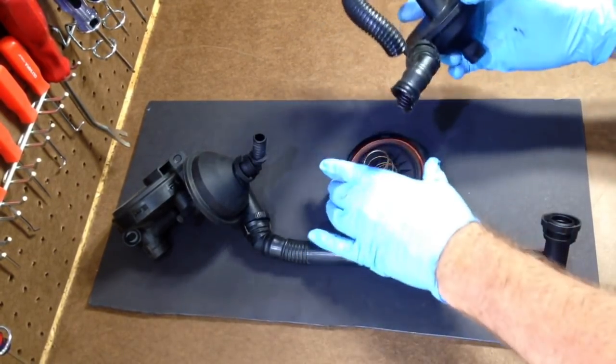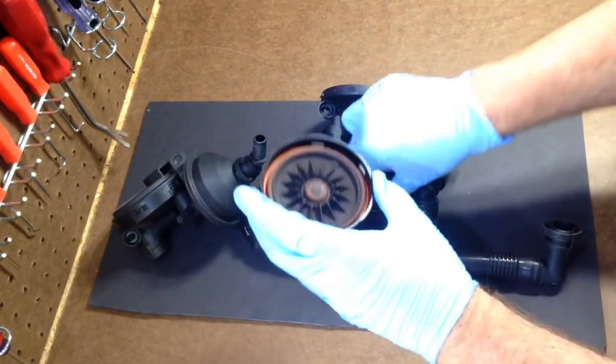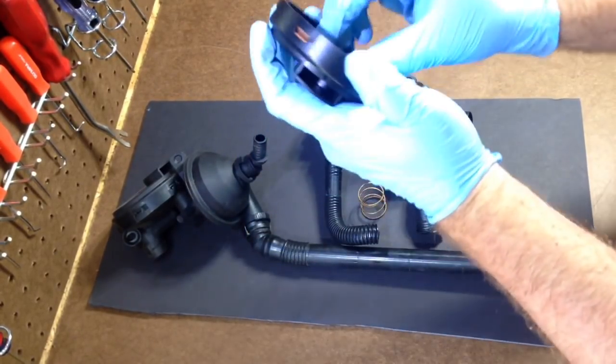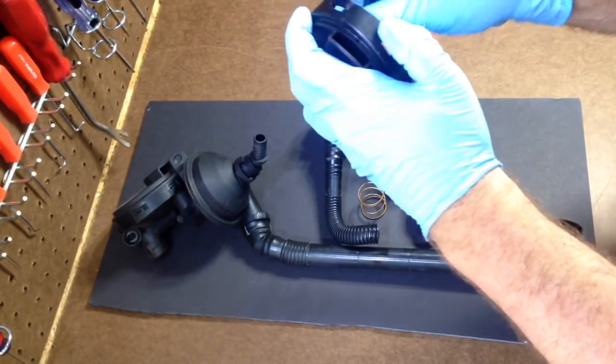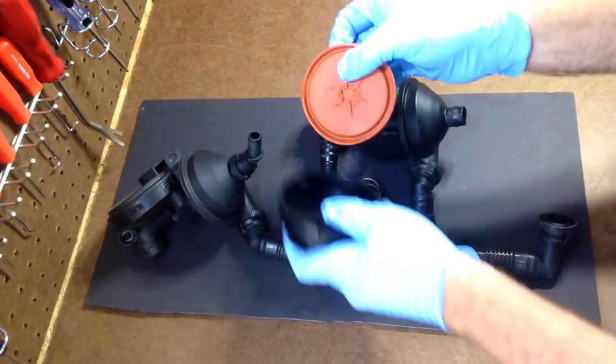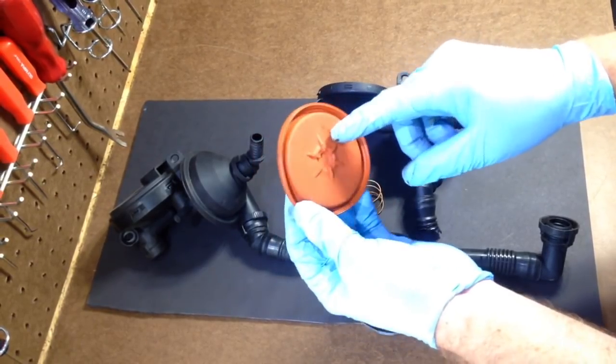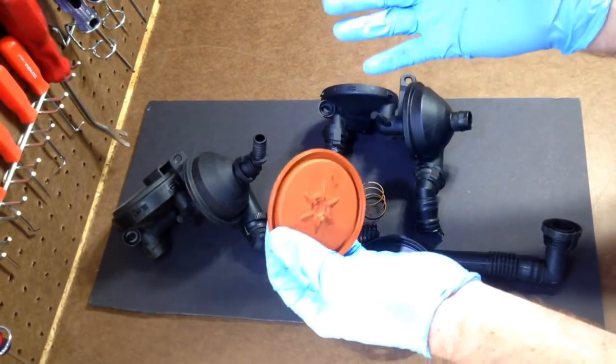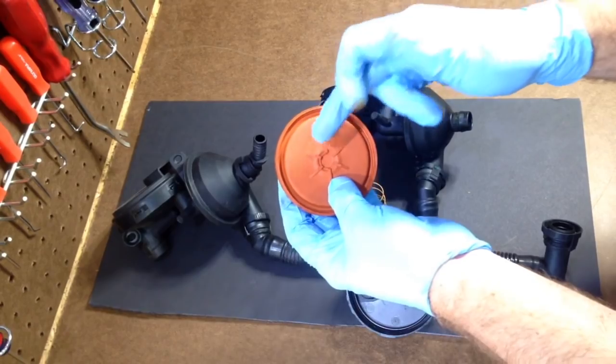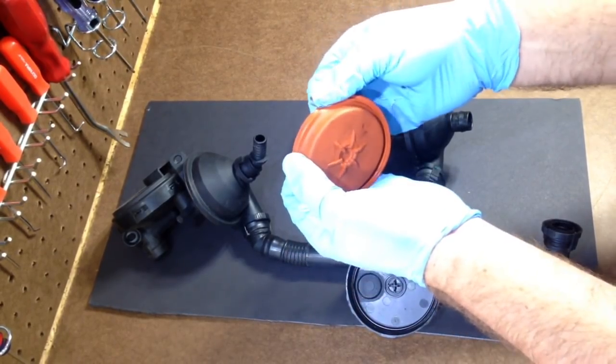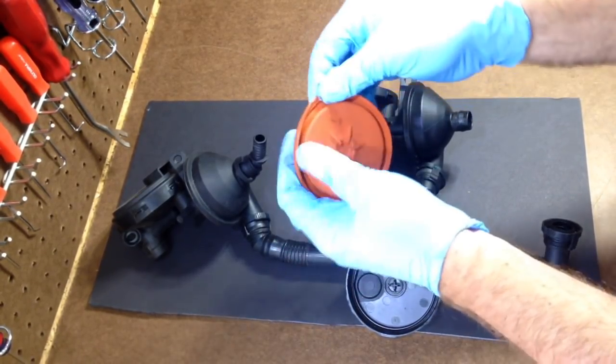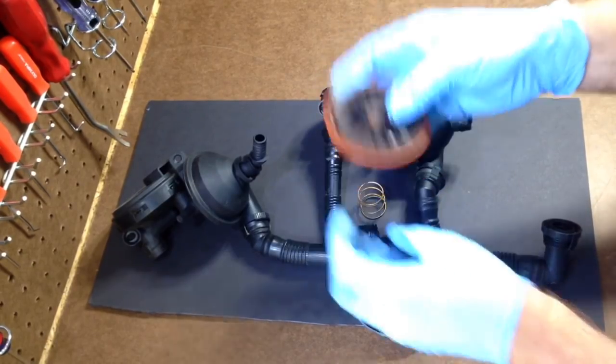Now, some common failures of this are one, this diaphragm. I'm going to get this out of here without snapping it off. This diaphragm gets rotten. And this is the same problem on the M62TU V8. Pretty much any BMW has this, everyone's have it on the top of the valve cover. And these will get ripped in the crease of that diaphragm. That's one failure point.